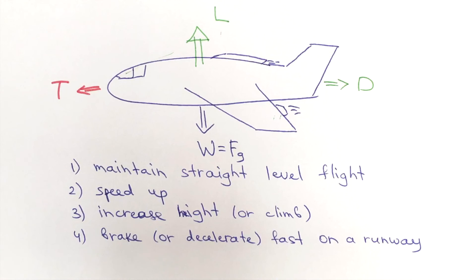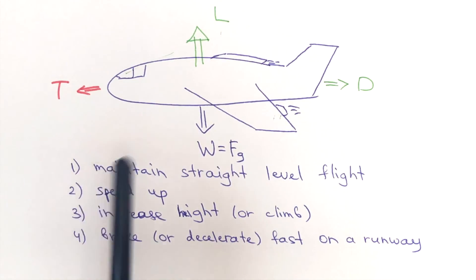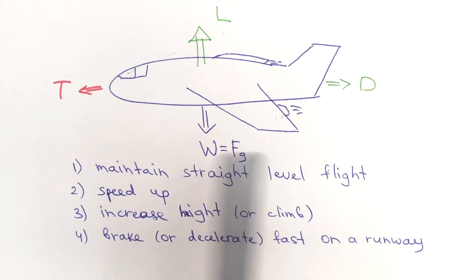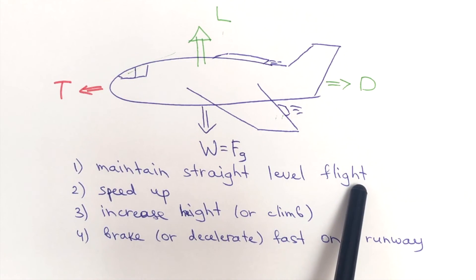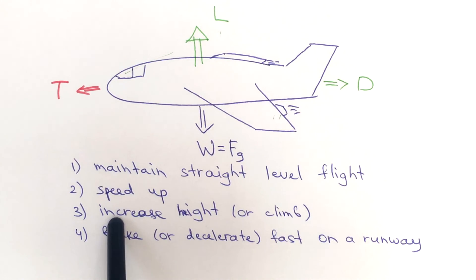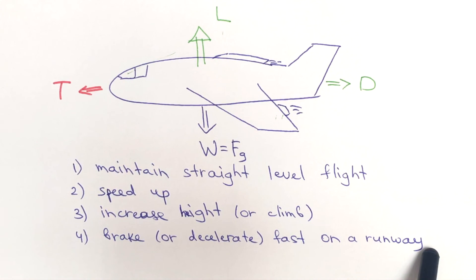All right, so now recall Newton's second law, and with that in mind try to figure out the relationships between these four forces in all of these cases. So which forces do we need to balance, or which force needs to be higher, in order to maintain straight level flight for the aircraft? What will be the relationship between the forces for the aircraft to speed up, the relationship between the forces for the aircraft to climb, and the relationship between the forces for the aircraft to decelerate fast on the runway after landing? And comment below with your answers to these four cases.